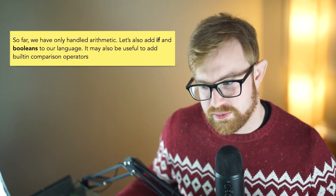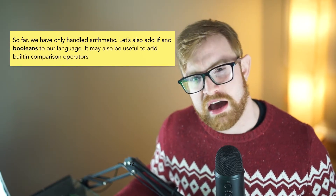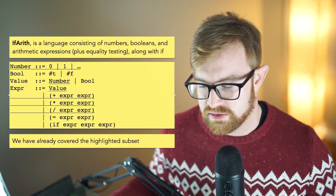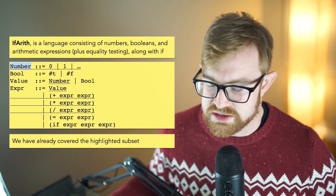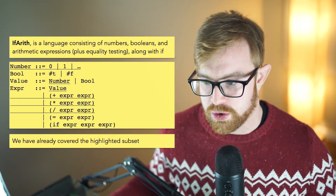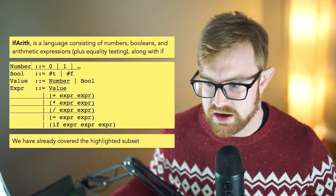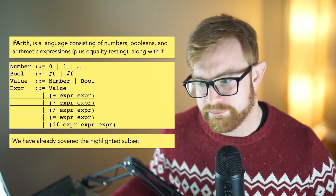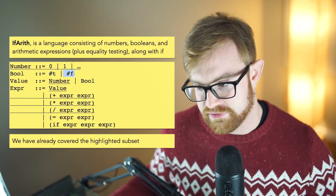So far we've really only handled arithmetic. Let's see what happens when we add if and booleans to our language. It's going to be useful to add a comparator operator as well. In fact, this is the entire language I'm going to be showing you, called ifarith. Each of these things is a syntactic sort, which we're defining using a form called extended Backus-Naur form. A number is something like zero or one or other things like that — it's a little bit informal.